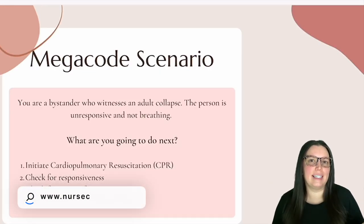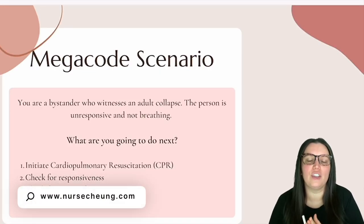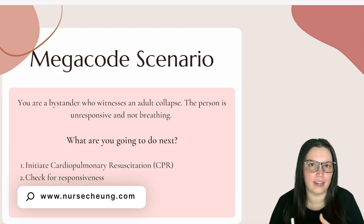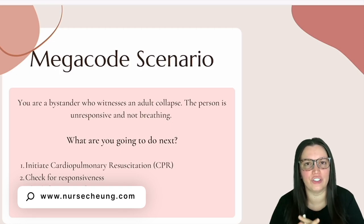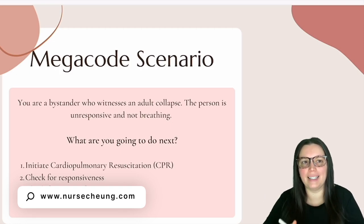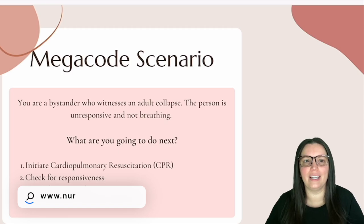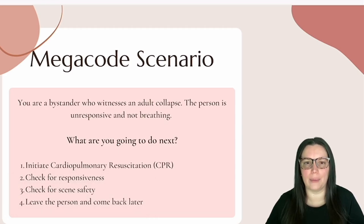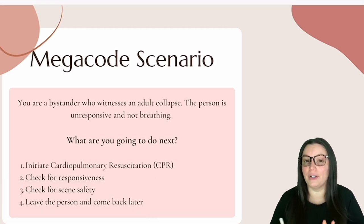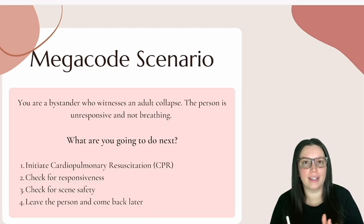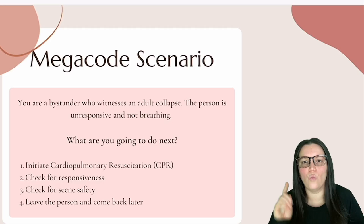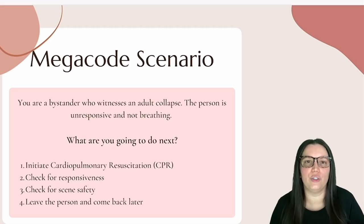The following is a scenario that can be used when looking at adult one-rescuer BLS. Here's your scenario: you are a bystander who witnessed an adult collapse. The person is unresponsive and not breathing. What are you going to do next?